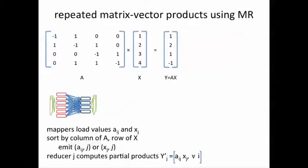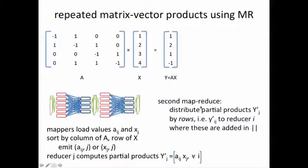Now, that's not enough because we still have to add these up this way. So the second MapReduce will do the following. It will distribute these partial products, which are now columns. So each reducer has a bunch of columns after they've been multiplied by the appropriate element of X and distributed by rows. For example, the partial product yij in the vector Y'j will get sent to reducer i, and then these will get added up.